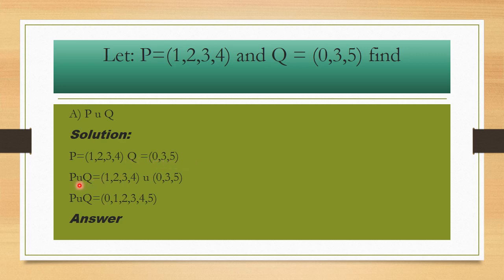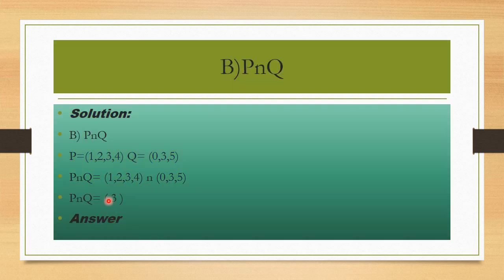In the first step, we will put U. U shows union. P union Q: we write P elements, then the union sign, then Q elements. So we combine these elements according to their sequence: 0, 1, 2, 3, 4, and 0, 3, 5. The answer is {0,1,2,3,4,5}. Next part: P intersection Q.